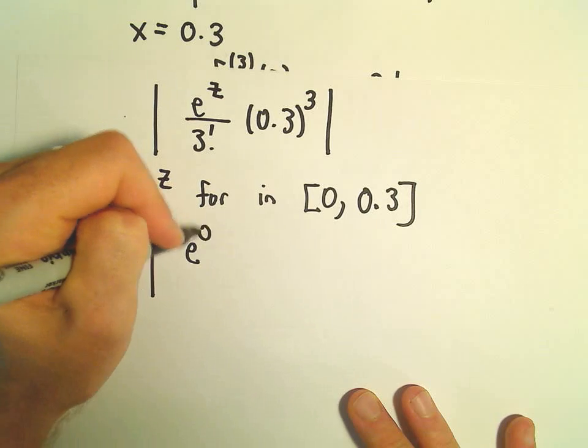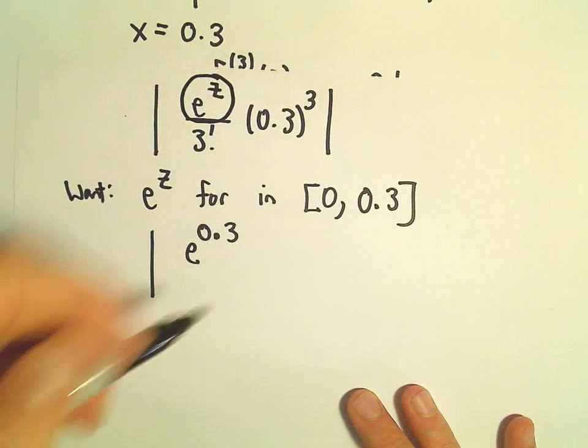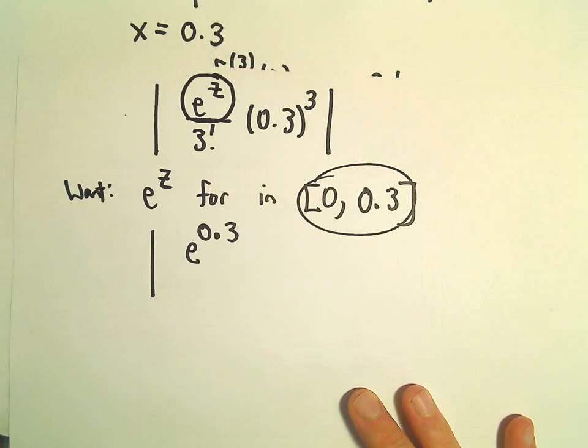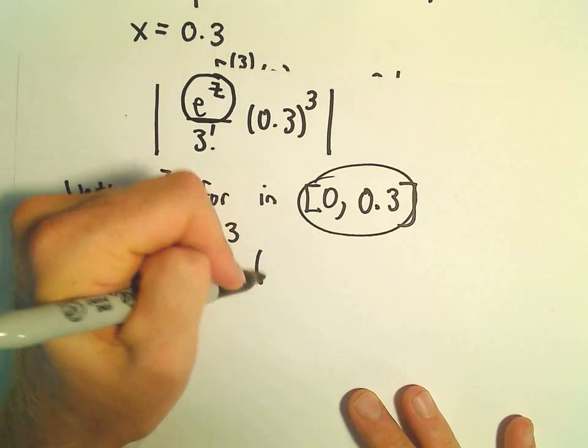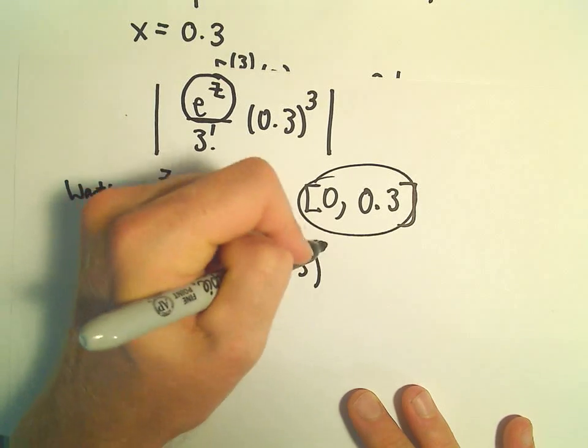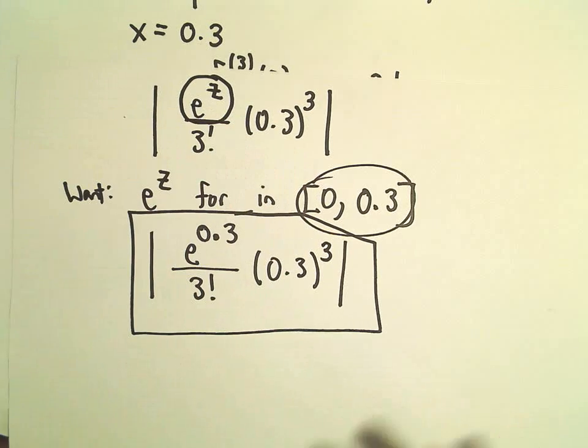So again, I've maximized the function e to the z over this interval over 3 factorial times 0.3 cubed. That would be an estimation of our error.